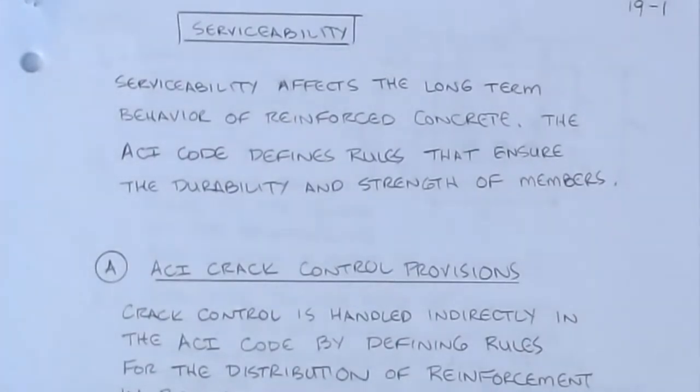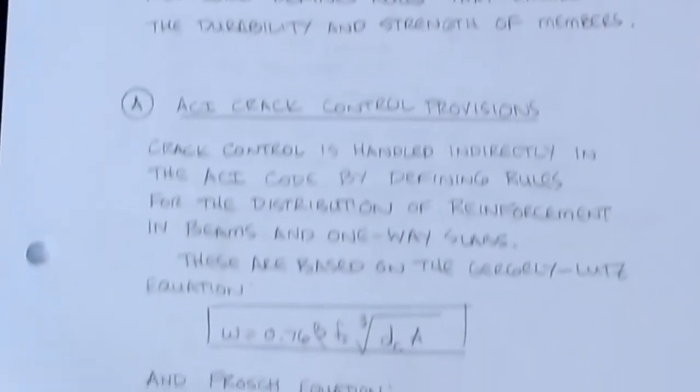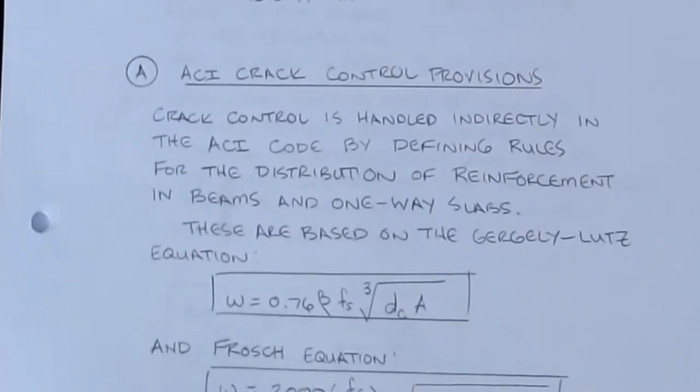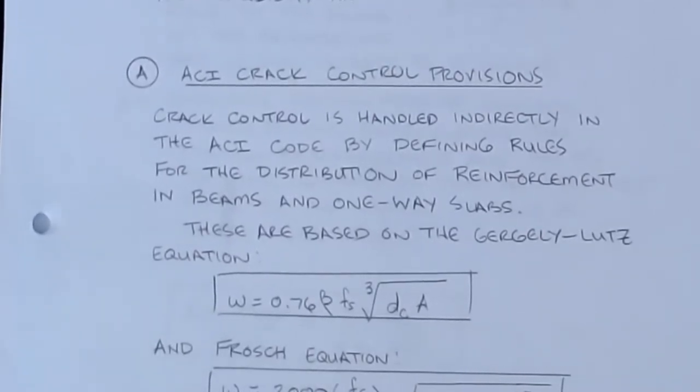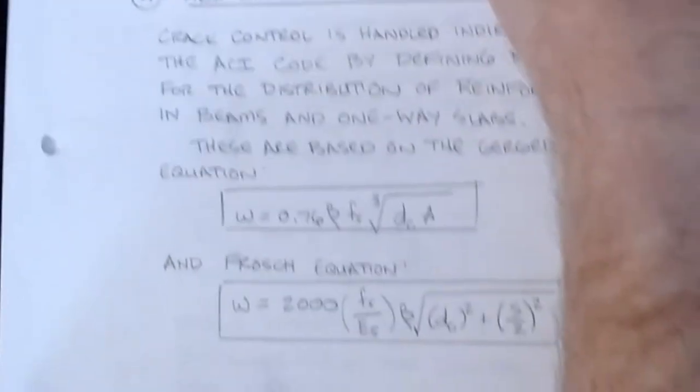We'll talk about some methods from older versions that are still used to this day to assess how well cracking is being handled by the reinforcing steel. In later videos, we'll get into long-term and short-term deflections, and that will be coming up very soon after this one. So we'll get ourselves going here and start off by talking about the crack control provisions. Basically, crack control is handled indirectly by the ACI code by defining rules for the distribution of reinforcement in beams and one-way slabs. Prior to recent versions of the code, this was much more explicit.